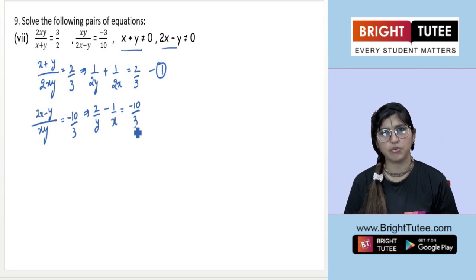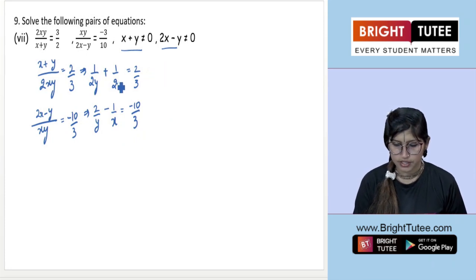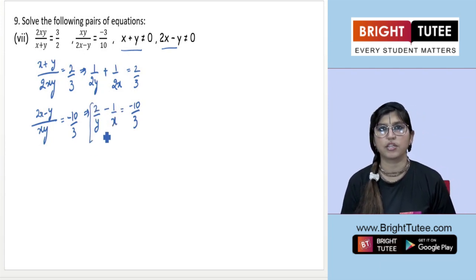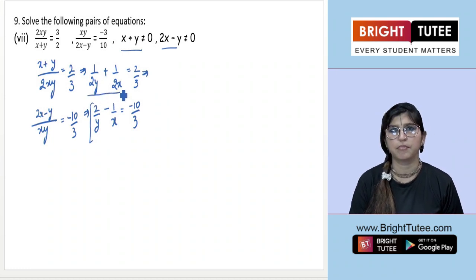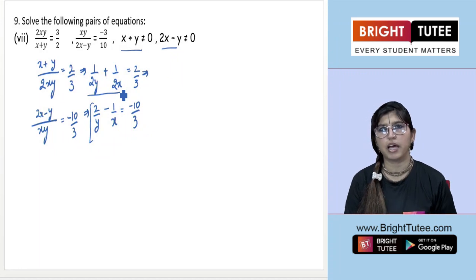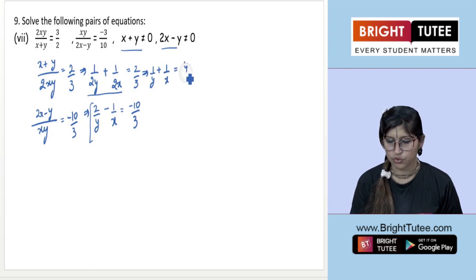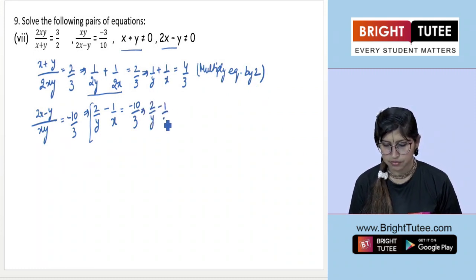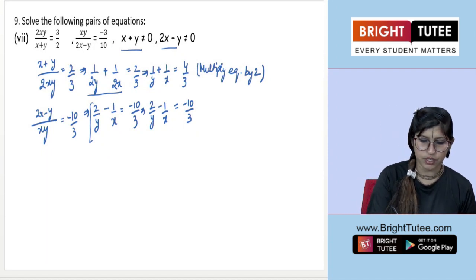To simplify, we notice we have 1/(2x) and −1/x in the first equation. We multiply the whole first equation by 2, which gives 1/y + 1/x equals 4/3. This makes the elimination step more straightforward.